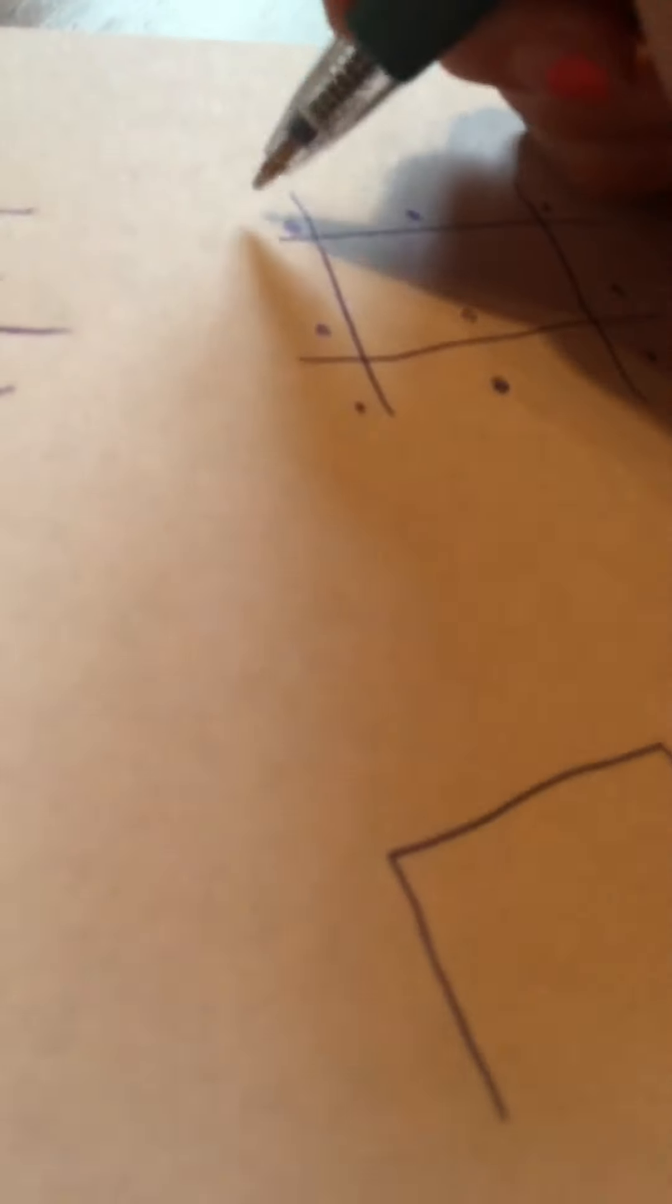Then this would be J. J would look like this. Dot. Instead, if it were A, it wouldn't have a dot. It would look like this. And that's how you continue doing the code.